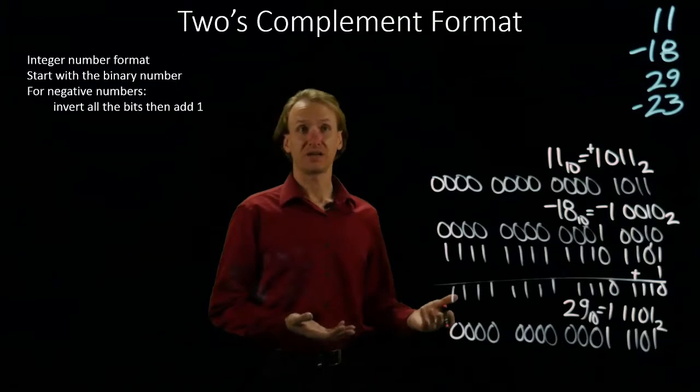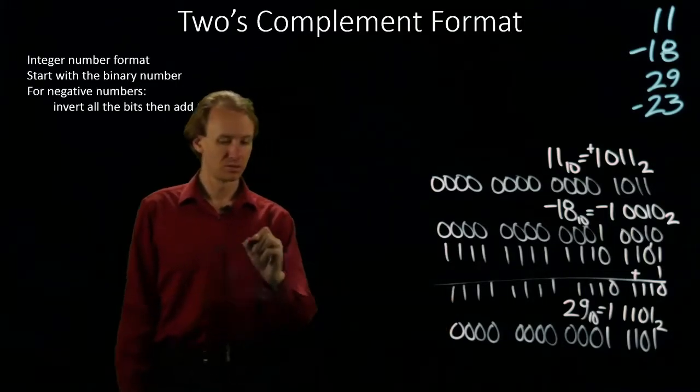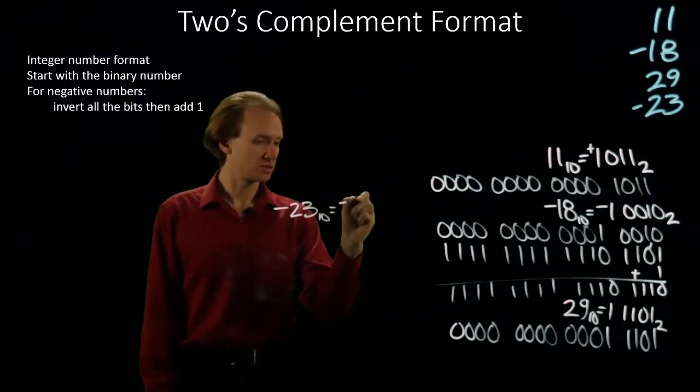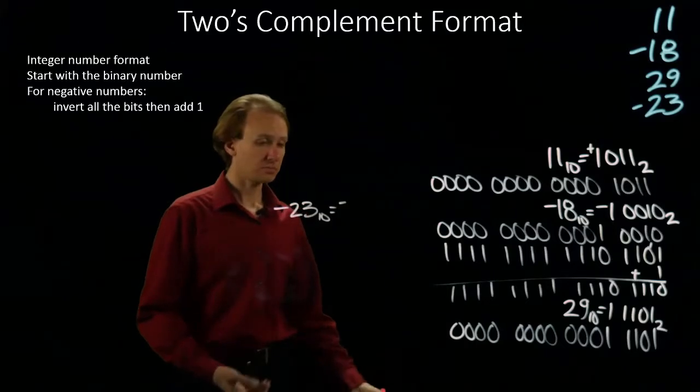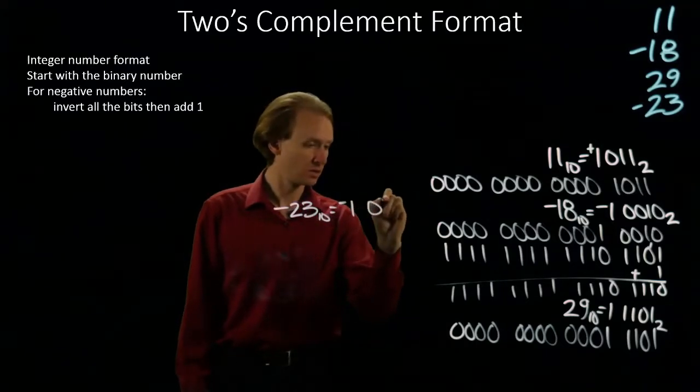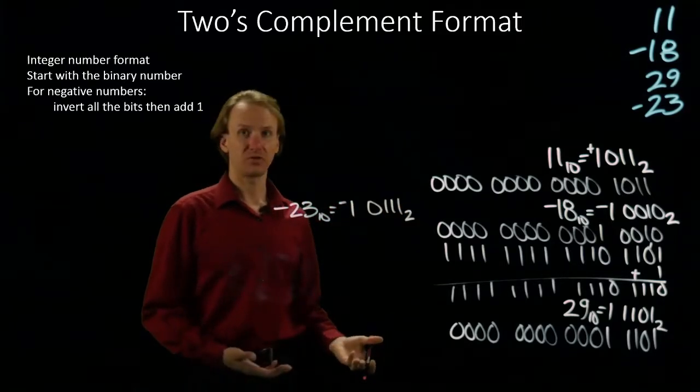My last number is negative 23. It's a negative number. 23 is 16 plus 7. So there's negative 23 in binary.